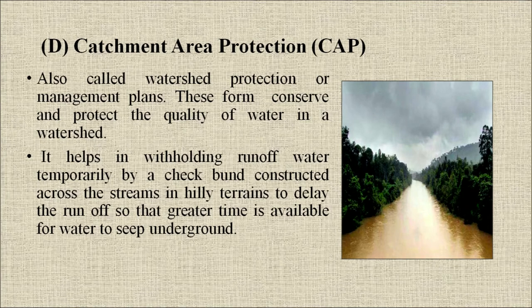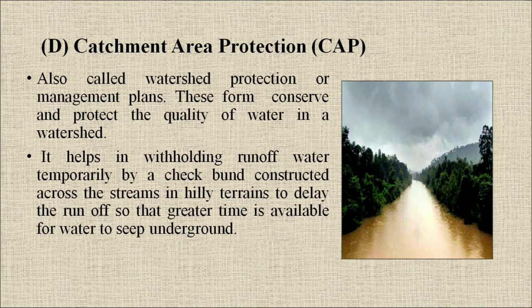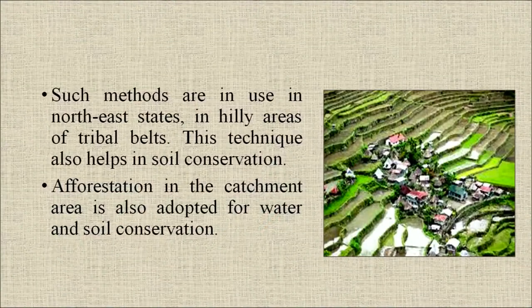Catchment area protection (CAP), also called watershed protection or management plan: these conserve and protect the quality of water in a watershed. It helps in withholding runoff water temporarily by a check bund constructed across streams in hilly terrain to delay runoff so that greater time is available for water to seep underground. Such methods are in use in northeast states and hilly areas of tribal belts. This technique also helps in soil conservation.